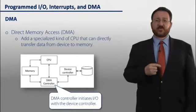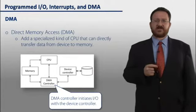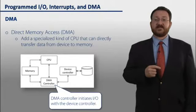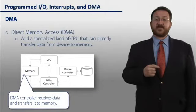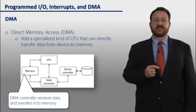The DMA controller, then, is going to initiate the IO with the device controller. The device controller, then, will interact with the disk or the network. And when it's done, it will send the data back to the DMA controller. The DMA controller, then, will receive that data and transfer it directly into memory.